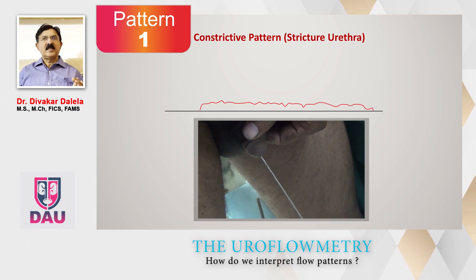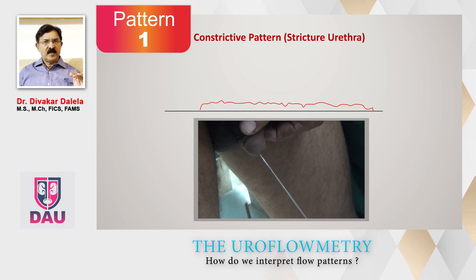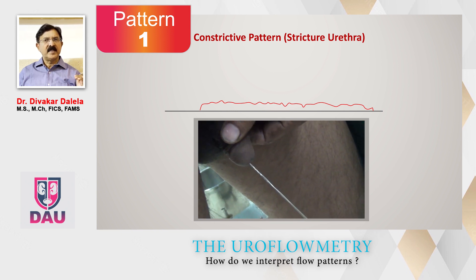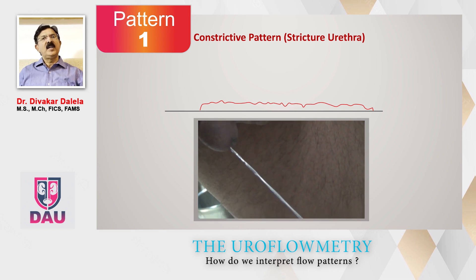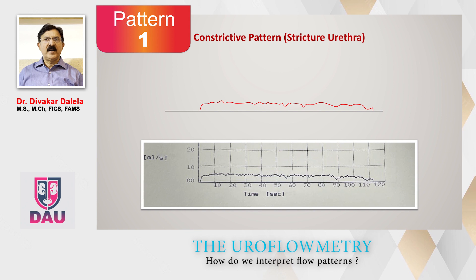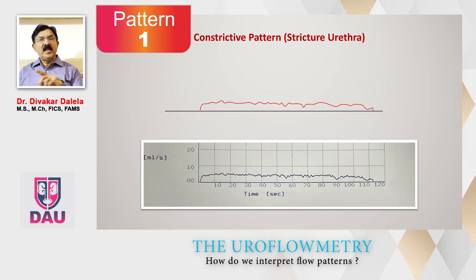In the constrictive pattern, the patient starts voiding and the stream reaches a Qmax which is usually low — around 5, 6, or 7 ml/s — and then it stays at that level for a long period of time. If you get a graph, the Qmax is about 5 ml per second and the patient has taken a very long time — 110 to 120 seconds, about 2 minutes. This graph looks like a box, and therefore it is also known as a box-type pattern.